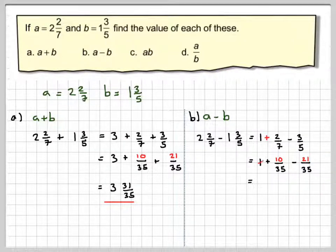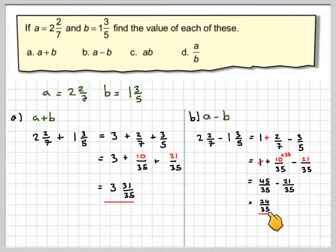Now, 10 minus 21 I can't do. So what I do is I borrow 1 from the 1, but that's 35 out of 35. So I now have 10 plus 35 up there, which is 45 over 35 minus 21 over 35. 45 minus 21 is 24 over 35. So just to repeat, 10 minus 21 I can't do, so I borrow 1, but 1 whole 1 is 35 out of 35. So I need to add 35 to 10 in order to get that 45 there. And then I can just subtract the numerators. 45 minus 21 is 24 over 35.